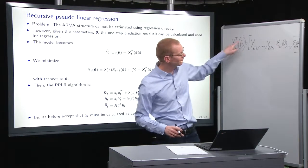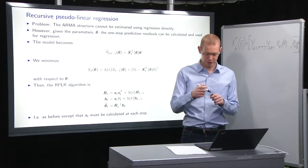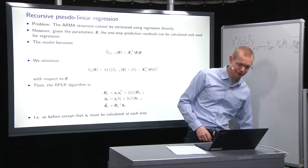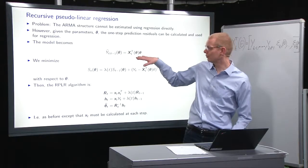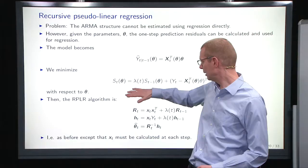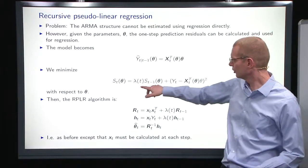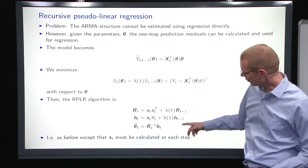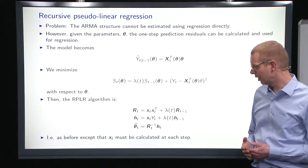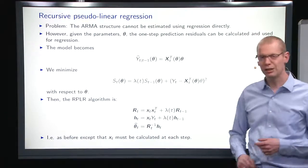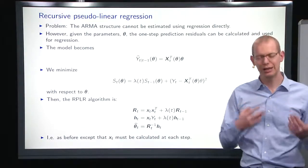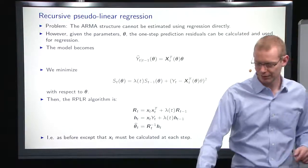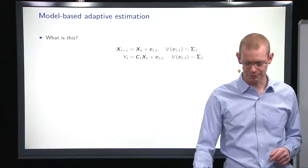So, all of a sudden, our x becomes a function of the parameters, and that's why we call it pseudo-linear regression because it's no longer a pure linear regression. What we minimize is the same. We will do it recursively again. And the algorithm down here is exactly the same as before, except that the x_t here, we need to recalculate that at each point in time because it depends, the epsilons there depends on the parameters that we just estimated.